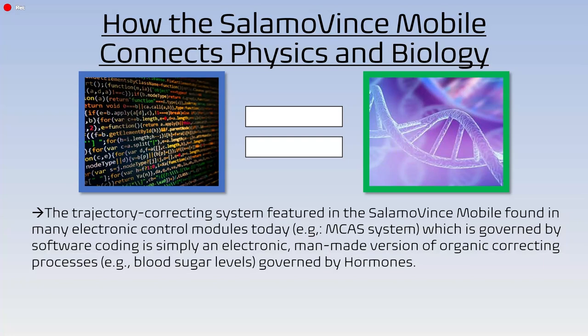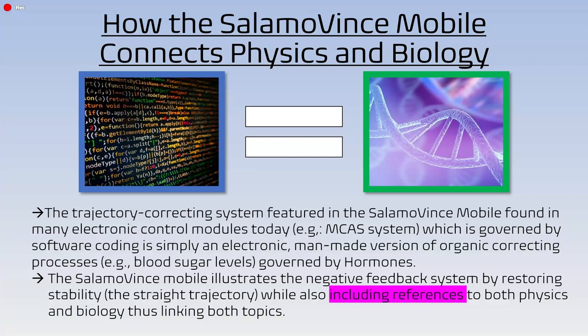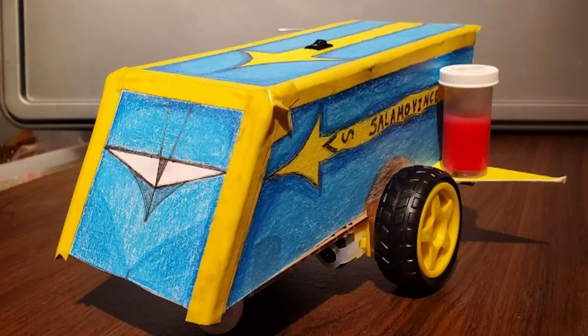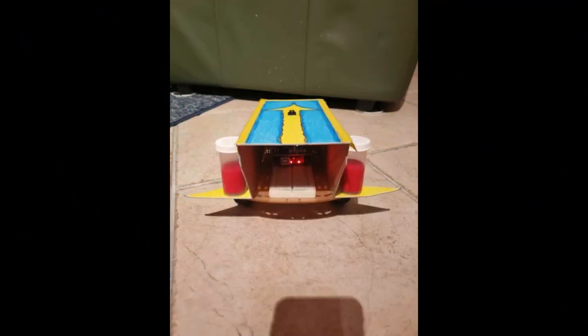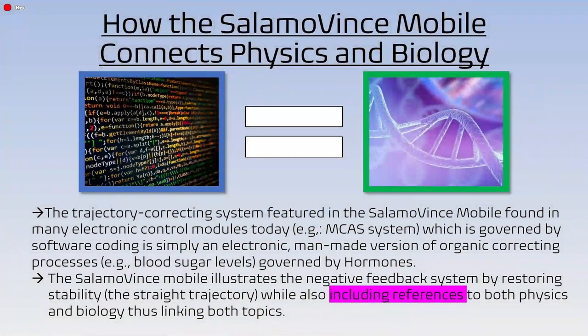So how does the Salamo Vince Mobile physics robot connect to biology? It's as simple as this: electronic code is basically equal to genetic code. The trajectory-correcting system featured in the Salamo Vince Mobile — found in many electronic control modules today such as the MCAS system — is governed by software coding. This is simply an electronic, man-made version of organic correcting processes such as blood sugar levels, which are governed by hormones. The robot illustrates a negative feedback system by restoring stability — in our case, the straight trajectory — while also including references to both physics and biology. These references include the design of the robot body which looks like a paper airplane, connecting to the MCAS system.